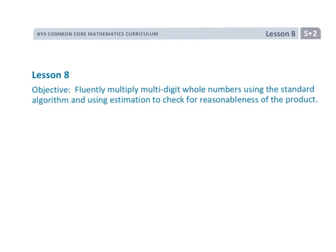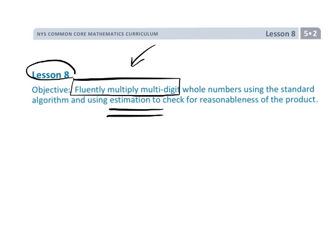So that ends lesson 8. So lesson 8, we are now fluently multiplying using the same old math that our parents used in the 1950s, 1960s, whatever. And then, but more importantly, we are using estimation to make sure that we are getting a reasonable answer.